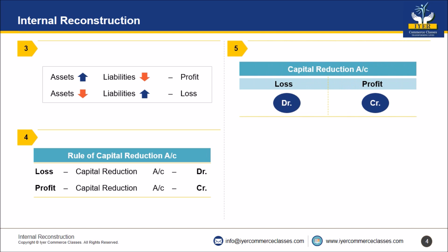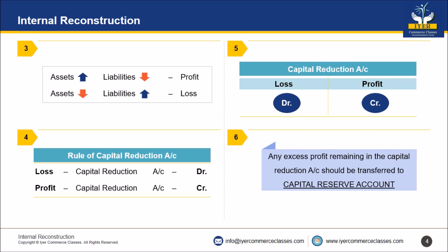Any excess profit remaining in the Capital Reduction Account at the end should be transferred to Capital Reserve Account. You will pass the journal entry: Capital Reduction Account debit, to Capital Reserve Account.